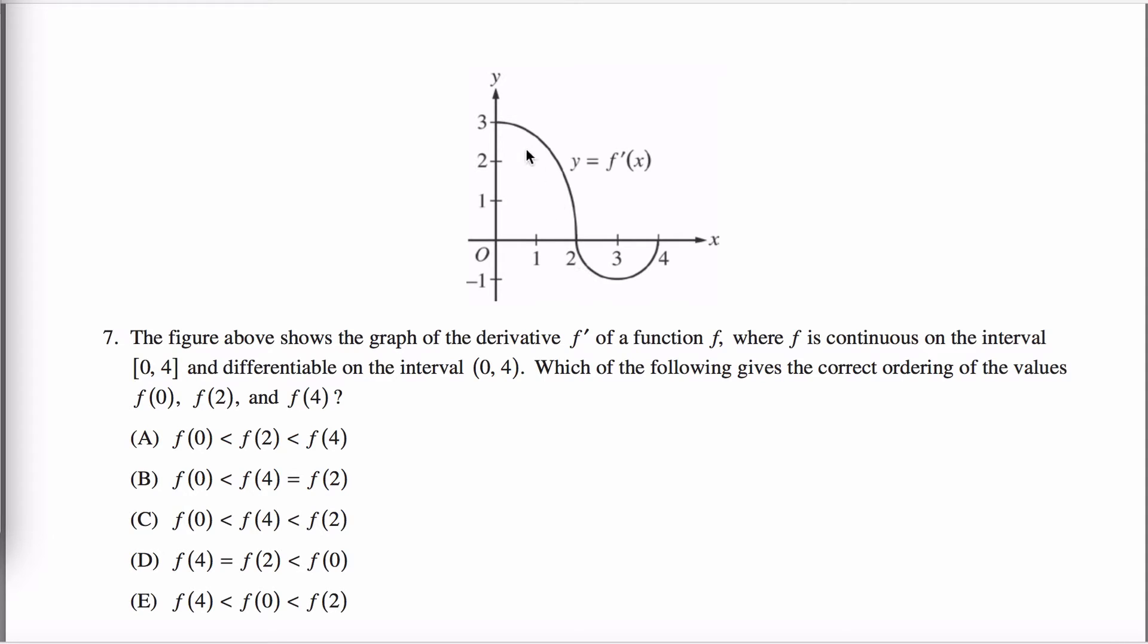If you stare at this graph, you'll note that the derivative is positive when x is between zero and two. So that tells me that everywhere from zero to two, my graph is increasing. And from two to four, the derivative is a negative number. So therefore, everywhere from two to four, my graph is decreasing. My graph goes up and then comes back down.